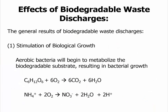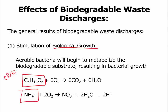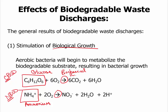The effects of biodegradable waste are that first, biological growth is stimulated. Again, the waste is the food for the microorganisms. Two compounds are given here to represent carbonaceous BOD, or carbon compounds that are food sources, and nitrogenous BOD, or nitrogen compounds that are food. The first is glucose, which is a representative organic compound, and the next is ammonium. Bacteria consume glucose and ammonium, and these reactions are biochemical reactions that occur within the cell. You'll see here that oxygen is consumed during this biological metabolism.